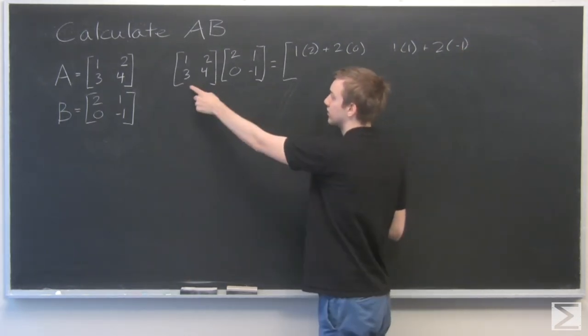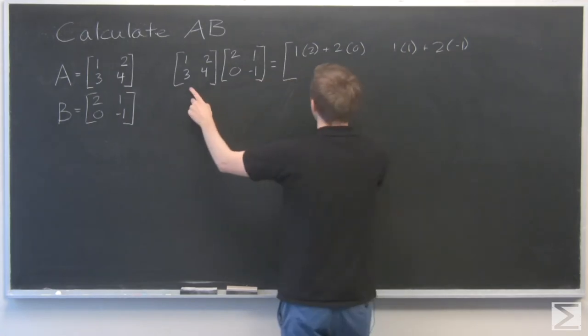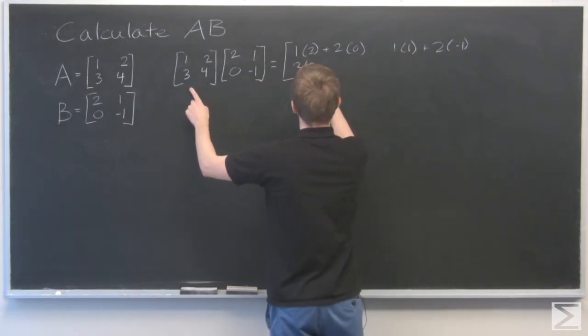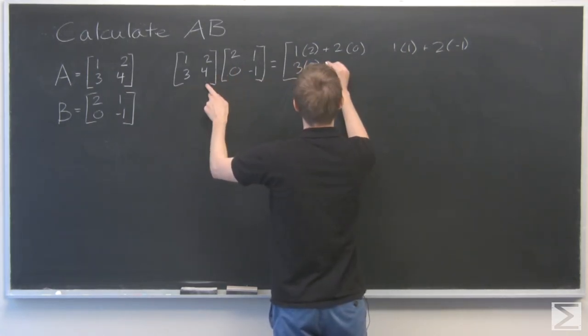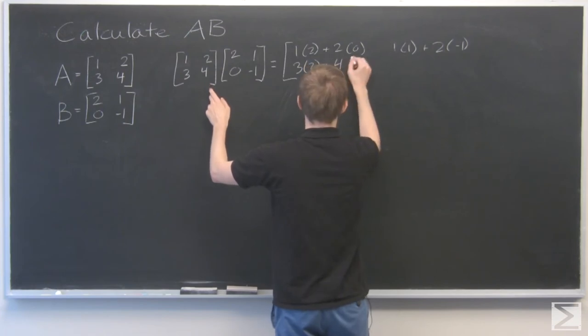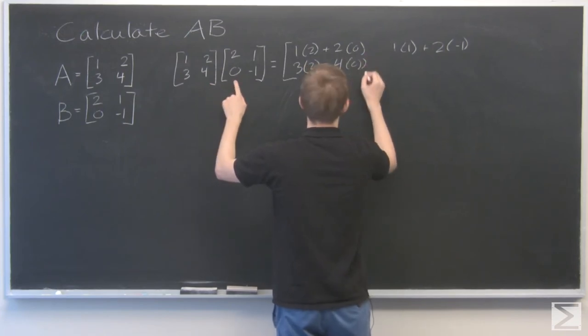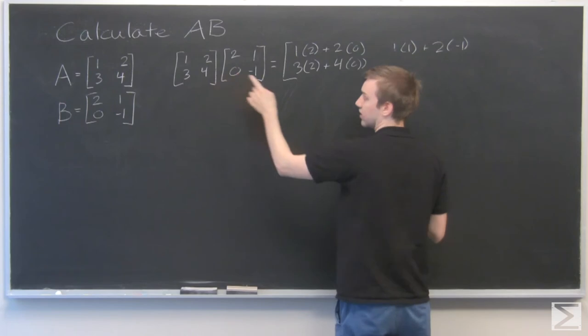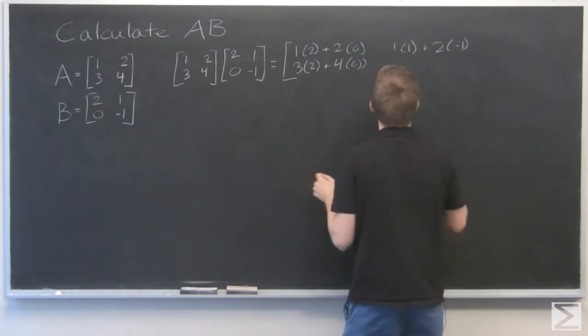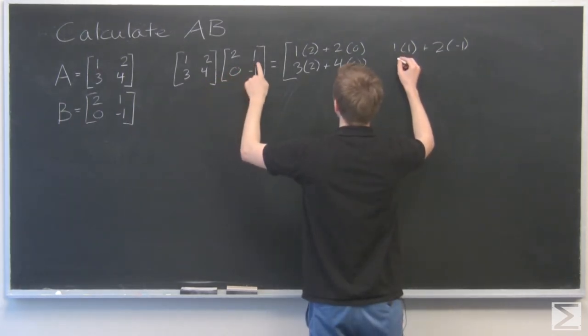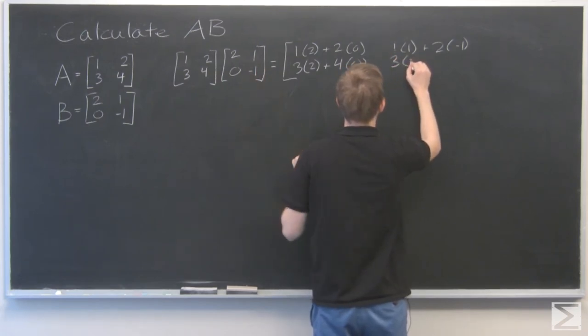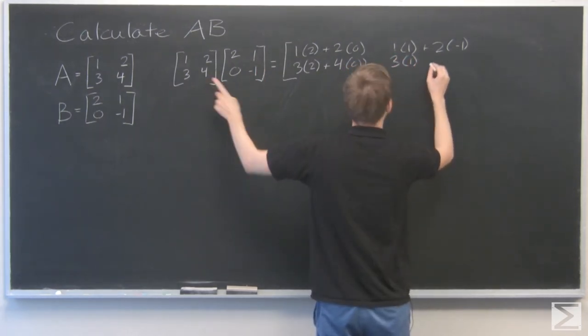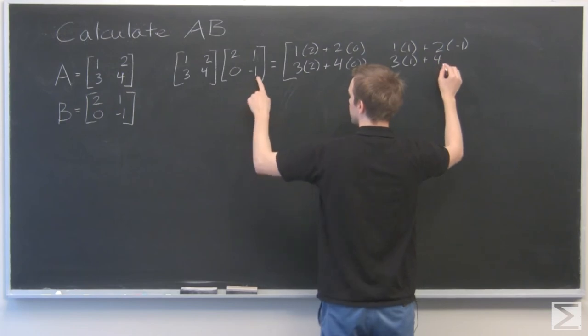Now second row, first column. It goes right here. 3 times 2 plus 4 times 0. Now second row, second column: 3 times 1 plus 4 times negative 1.